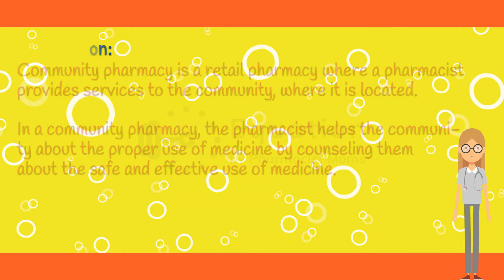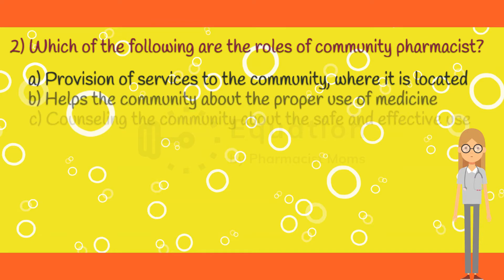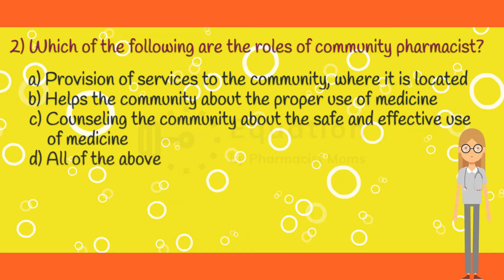Question 2. Which of the following are the roles of community pharmacist? Option A: Provision of services to the community where it is located. Option B: Helps the community about the proper use of medicine. Option C: Counseling the community about the safe and effective use of medicine. Option D: All of the above options.